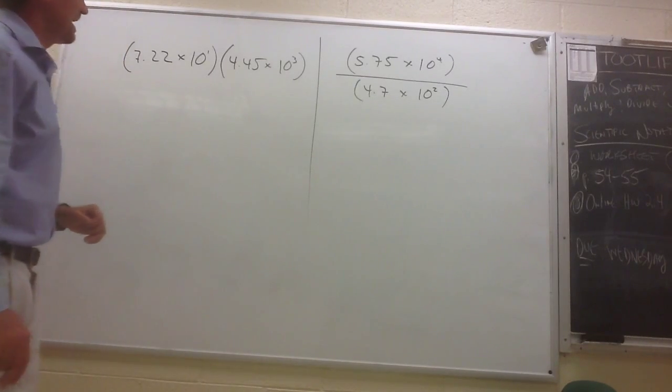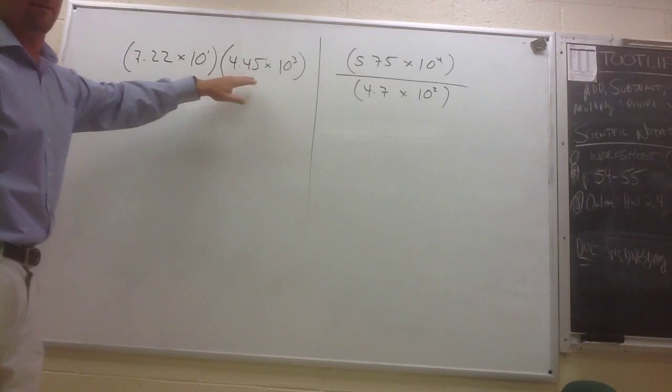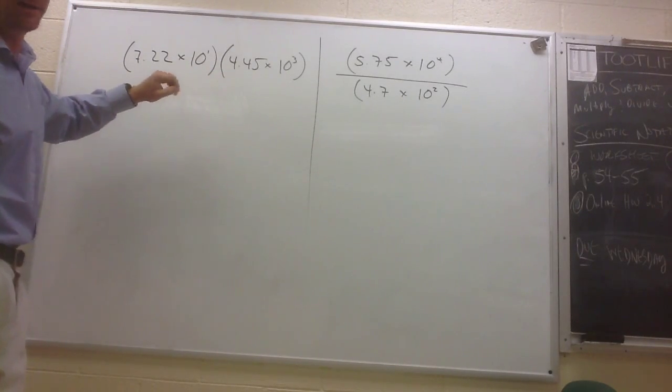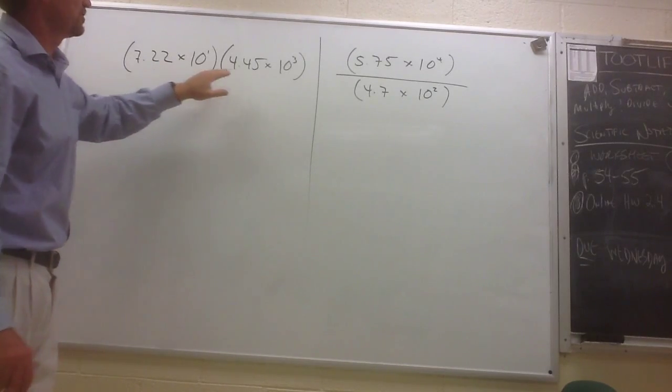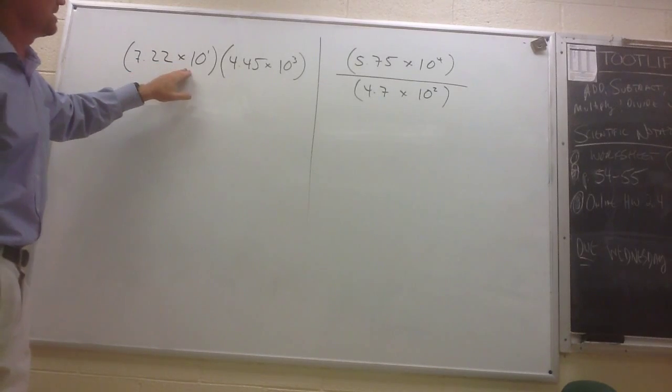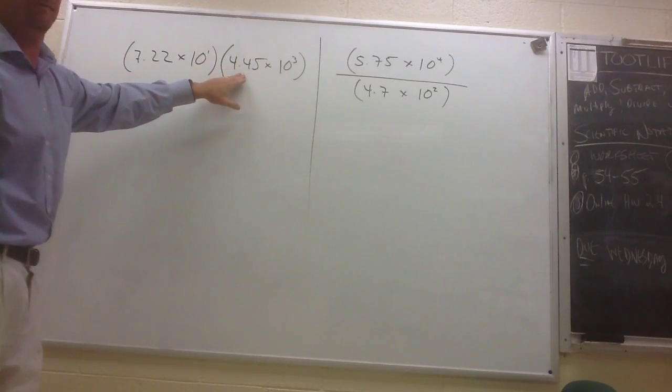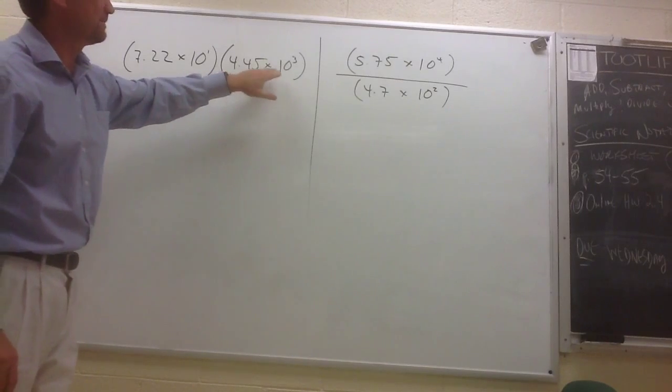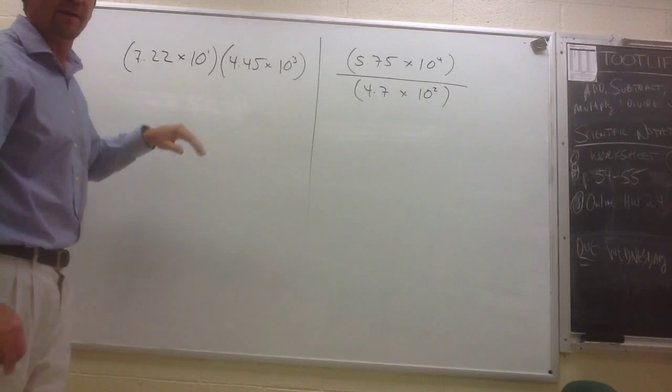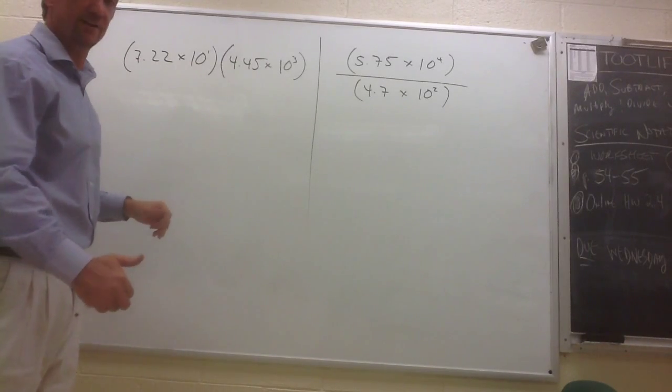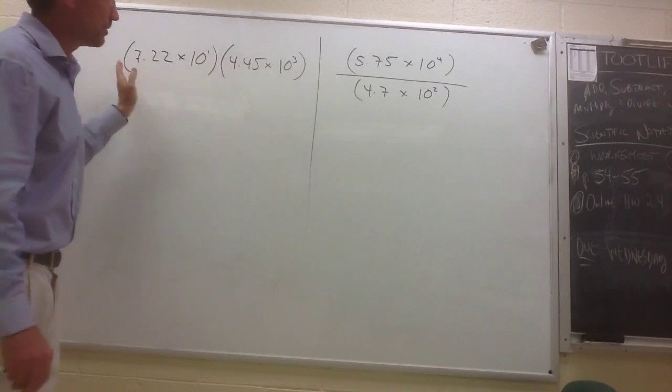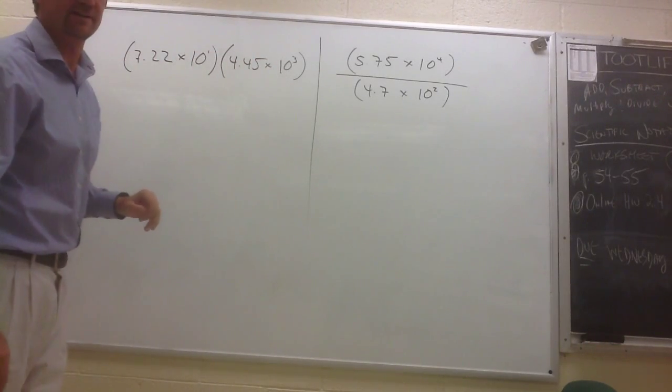And what we talked about today in class is that with a multiplication problem, it's real easy to do some multiplication on numbers that are written in scientific notation because this is all multiplication, 7.22 times 10 to the 1st times 4.45 times 10 to the 3rd. Because that's all multiplication, remember that multiplication is commutative and associative. In other words, we can move these terms around however we want. As long as we multiply them all together, we're going to get the same result.